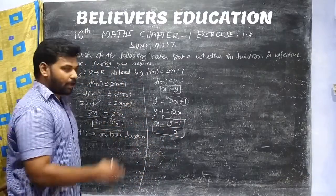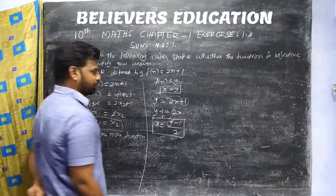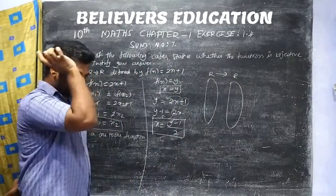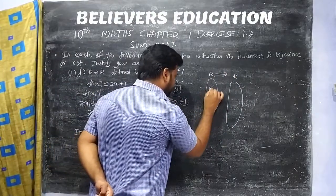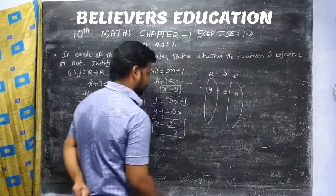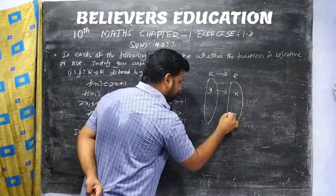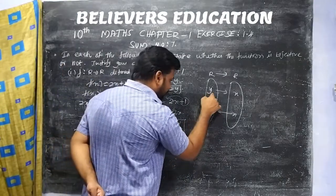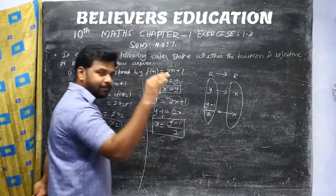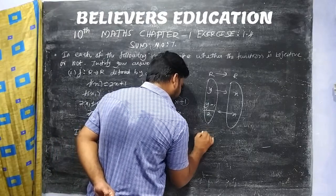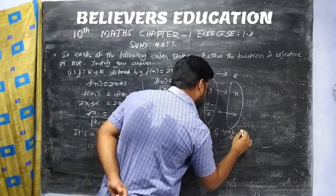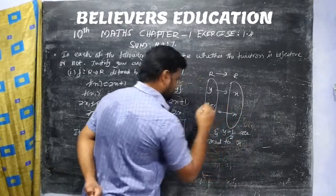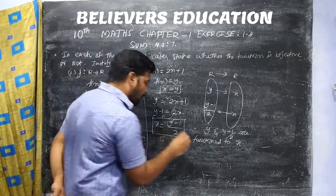Now, what do we do with the onto condition? The relation is R to R. If y belongs to R, then x equals (y minus 1)/2 also belongs to R, since (y minus 1)/2 is a real number for any real y. So the onto condition is satisfied.